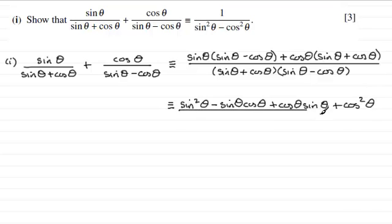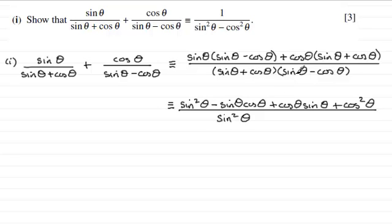The minus sine theta cos theta and plus cos theta sine theta terms cancel out. For the denominator, we're multiplying out what is the difference of two squares: sine theta times sine theta gives sine squared theta, the cross terms cancel, and cos theta times minus cos theta gives minus cos squared theta. So we've achieved the required denominator.